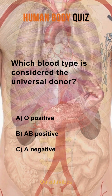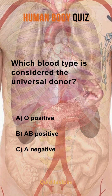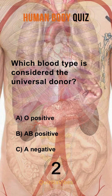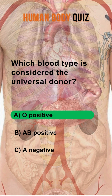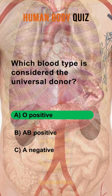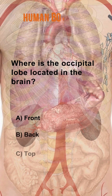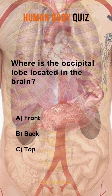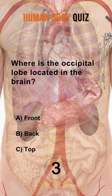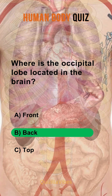Which blood type is considered the universal donor? O positive. Where is the occipital lobe located in the brain? Back of the brain.